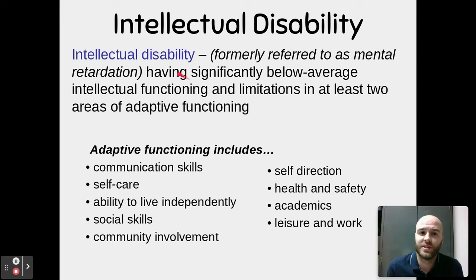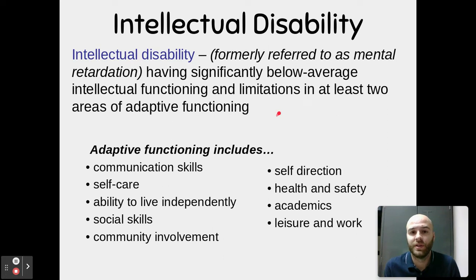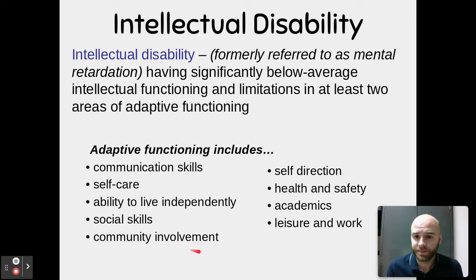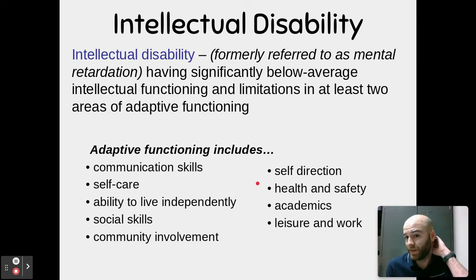Intellectual disability is having significantly below average intellectual functioning and limitations in at least two areas of adaptive functioning. To qualify as intellectually disabled, you have to have limitations in at least two of these areas, which could include communication skills, ability to interact with others, self-care, activities of daily living, ability to live independently, social skills, community involvement, self-direction, health and safety, academics, and leisure and work.